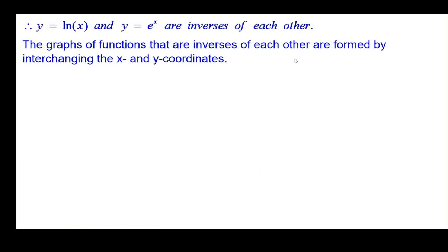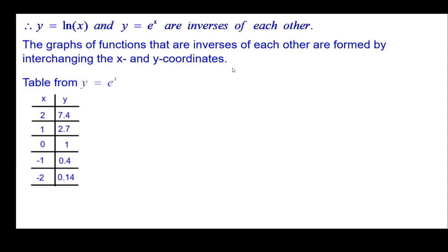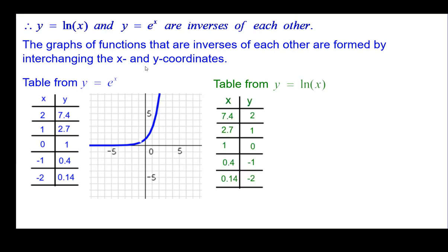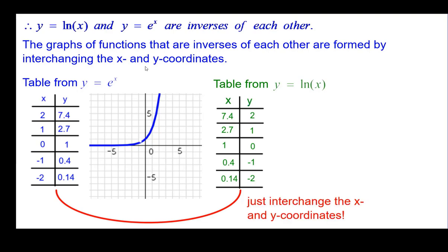Since they are inverses of each other, they're formed by interchanging the x and y coordinates. So here's our table from the exponential function, which hopefully you just did the video for. We did need to use a calculator to know these values. And the graph looks like this — exponential growth. So the table from the natural log of x will look like this, because we just interchanged the x and y coordinates. It's that simple. So if you know the graph of e to the x, you know the graph of y equals natural log of x.